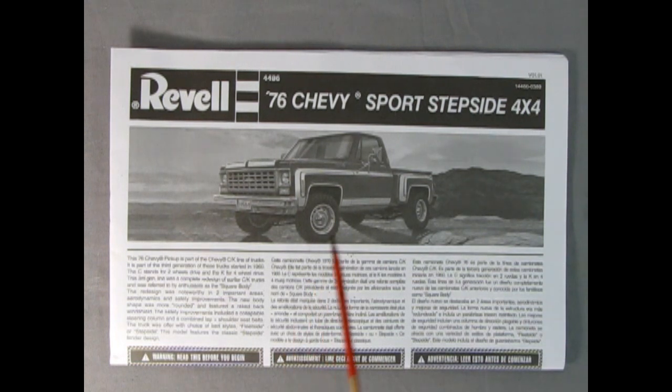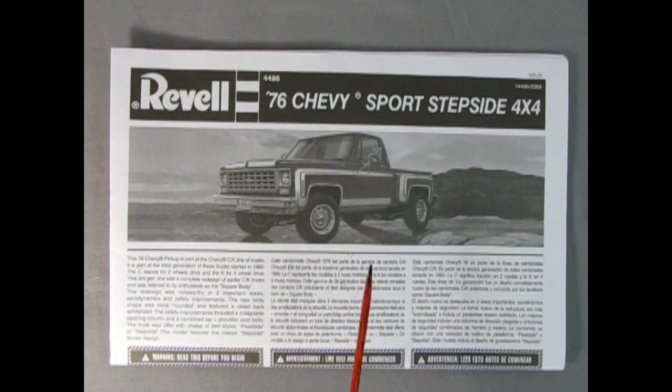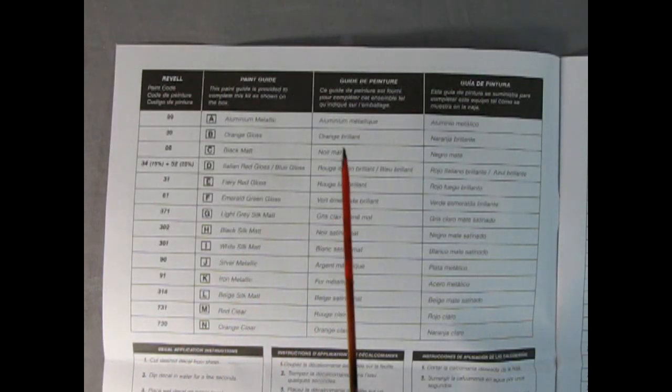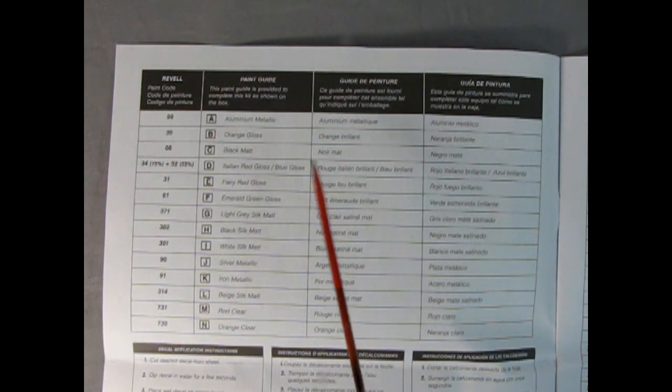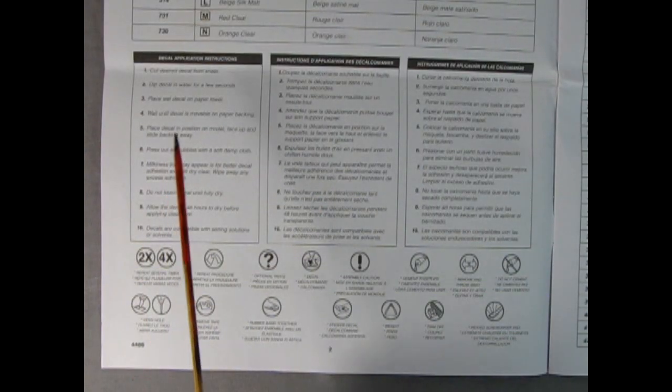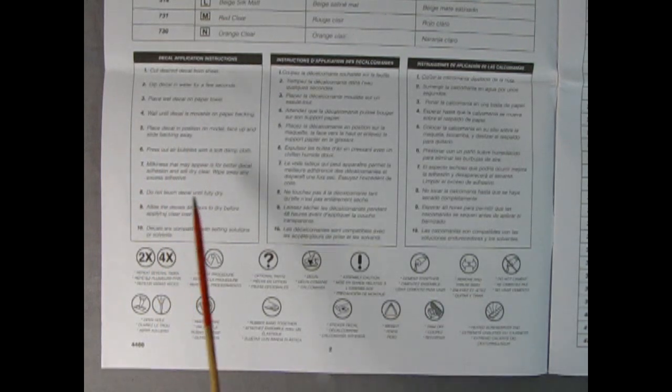Now we will take a look at the instruction sheet for our Revell 76 Chevy Sport Stepside 4x4. I always like to show the instructions to the model kit so that you know what it looks like to build this thing, and in case you lose your own instructions this video is sure to help. Revell always includes a full paint chart in the instruction sheet so you know which colors to paint your model.